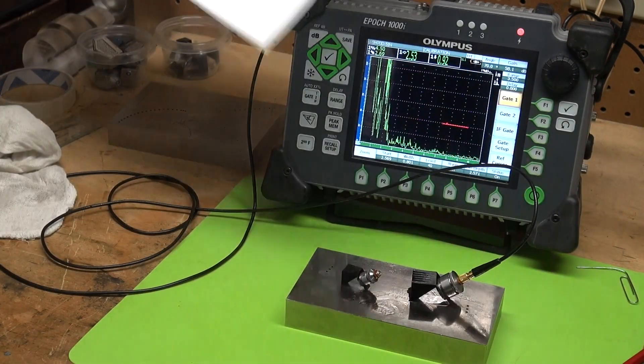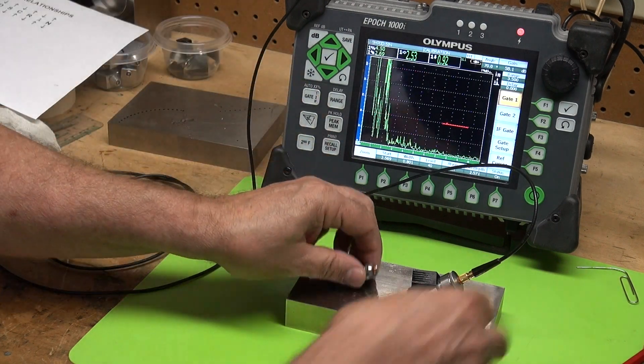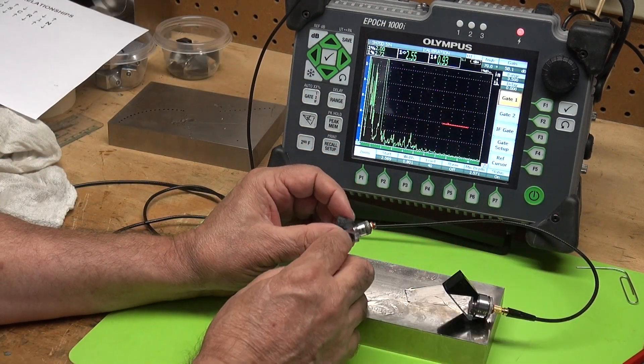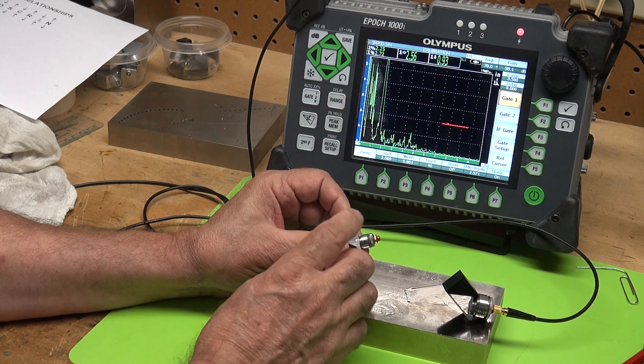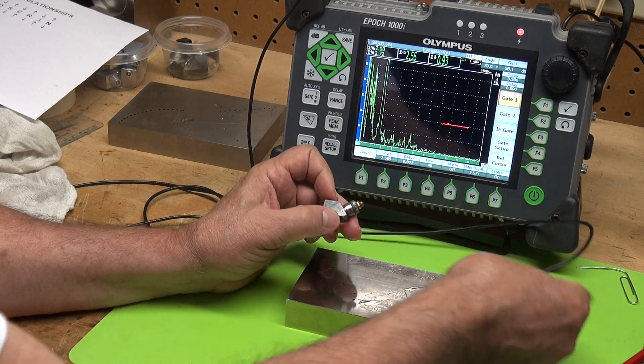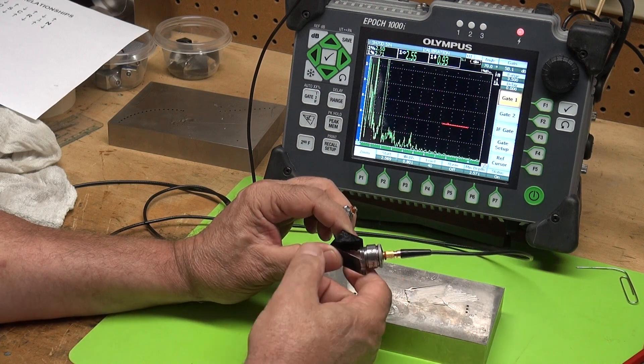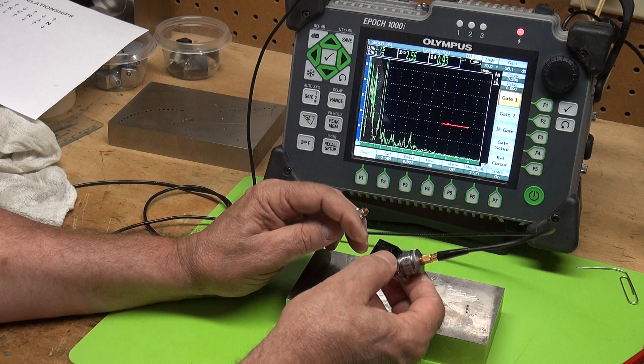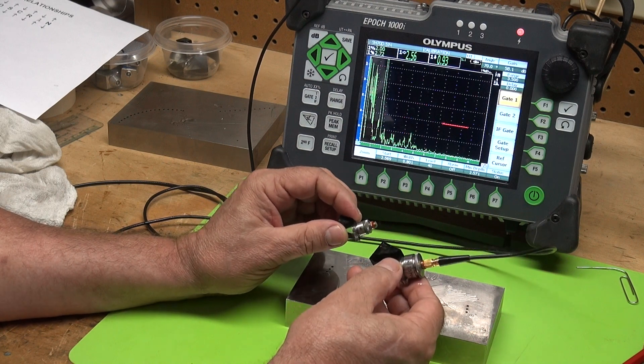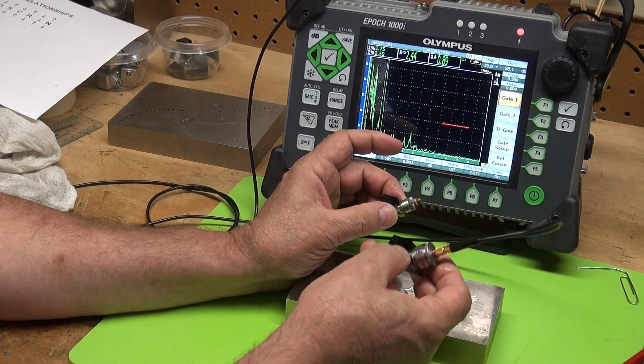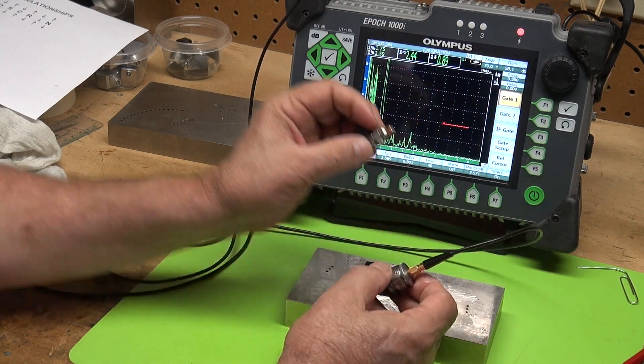And I'm going to demonstrate that today by using two transducers. I'm going to use a 5 megahertz, quarter inch, 70 degree wedge, and a one and a half megahertz, half inch diameter, 70 degree wedge. I know it's not quite apples to apples, because I don't have a half inch, five megahertz, and I don't have a quarter inch, one and a half megahertz.